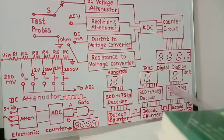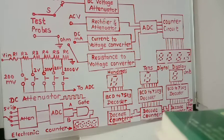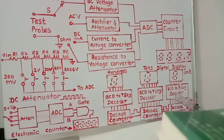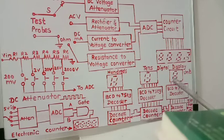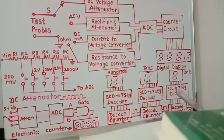In the counter circuit, the output from the analog to digital converter is fed as a clock signal to the decade counter. The decade counter counts the number of pulses arriving at its clock input, and then it is decoded by the BCD to seven-segment decoder and we use a digital display in decimal form.